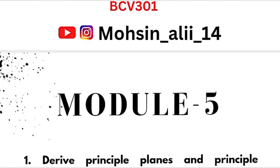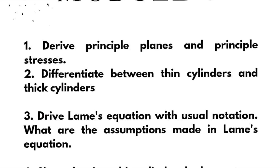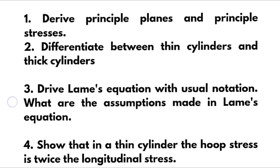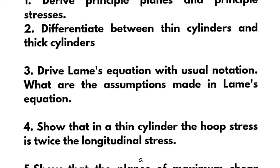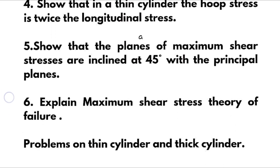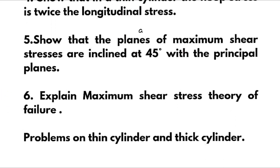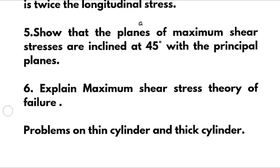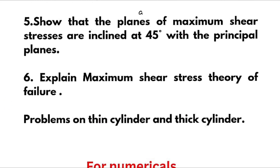For Module 5: define principal planes and principal stresses. Differentiate between thin cylinders and thick cylinders. Derive Lame's equation with usual notation and list the assumptions made in Lame's equation. Show that in a thin cylinder the hoop stress is twice the longitudinal stress. Show that the planes of maximum shear stress are inclined at 45 degrees with the principal planes. Explain the maximum shear stress theory of failure. If convenient, go through problems on Lame's equation and thick cylinders.